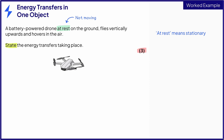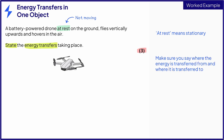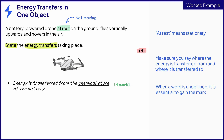The three marks are an indication that we're looking to name three energy stores. The command word here is 'state.' It's tempting to think that means you just have to name the three energy stores, but be careful — the question is 'state the energy transfers taking place.' In any transfer, there is a store that energy is being transferred from and a store that energy is being transferred to. Energy is transferred from the chemical store of the battery in the drone — that's the first mark. The underlined words in a mark scheme mean you have to say that exactly to get the mark.